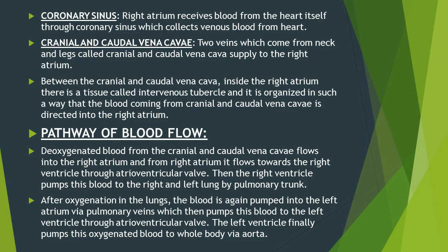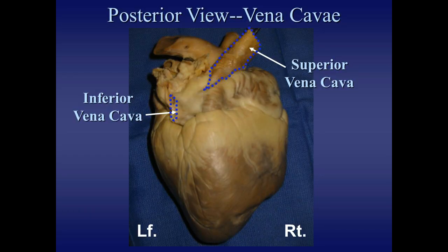On the atrial face of the heart, the cranial vena cava and caudal vena cava collect blood from the head, neck, legs, lower abdomen, and thoracic regions and pour it into the right atrium. Between these two vessels inside the right atrium there is a tissue called the intervenous tubercle, which directs blood from the cranial and caudal vena cava into the right atrium.